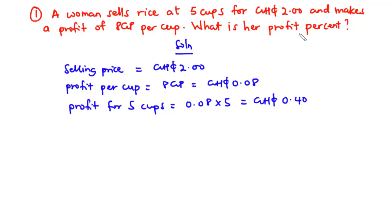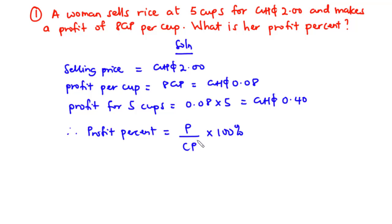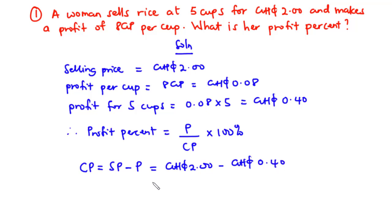We are asked to find her profit percent. Profit% = (Profit / Cost price) × 100%. We know the profit but not the cost price. Cost price = Selling price − Profit = 2 Ghana cedis − 0.40 Ghana cedis = 1.60 Ghana cedis.